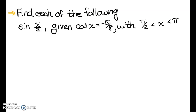This is the second video doing examples on half-angle identities, chapter 5.6. The instructions say find each of the following. We need to find the sine of x over 2, given that the cosine of x is negative 5 eighths, and x is in quadrant 2. So I'm going to mark that x is in Q2.